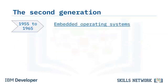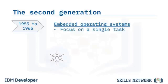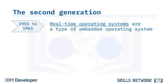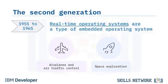Embedded operating systems, developed in the early 1960s and still in use, focus on a single task, providing split-second response times, also known as low latency. In case of a system error, these operating systems can restart where the task needs to resume. Real-time operating systems are a type of embedded operating system.